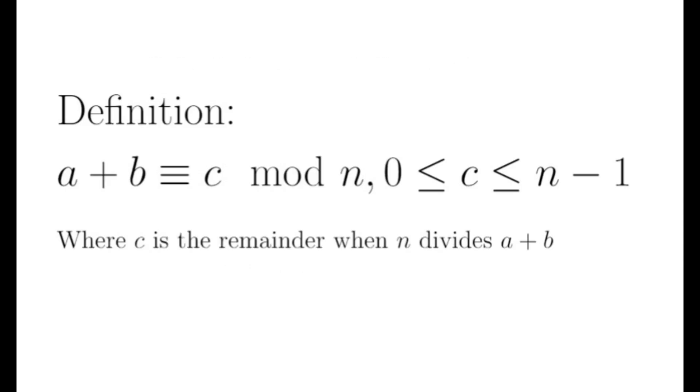So we say a plus b or a times b is equivalent to c modulo n, where c is an integer between 0 and n minus 1 inclusive, and c is the remainder you get when you divide the sum a plus b by n. Now if n divides a plus b, then c would be 0. For example, 3 plus 5 is 8, which is equivalent to 0 modulo 4, since 8 is a multiple of 4.